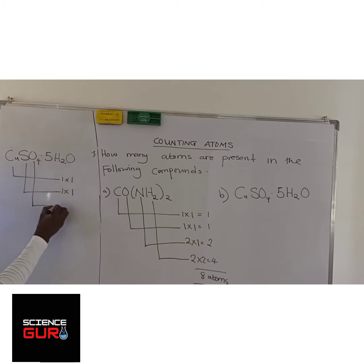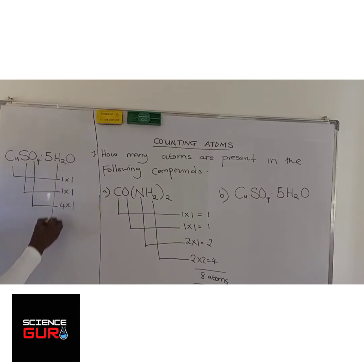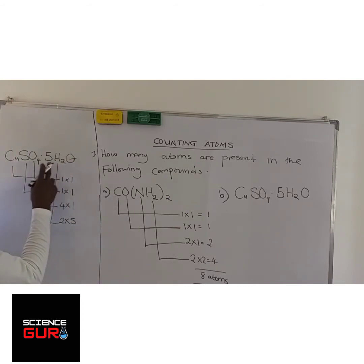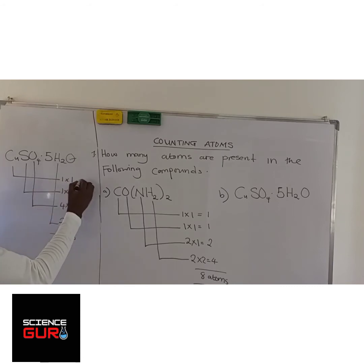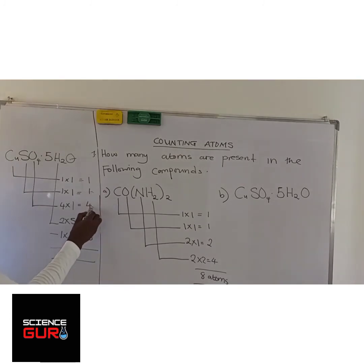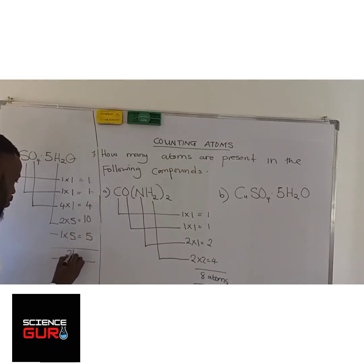How many oxygens in SO₄ are present? Four times one. How many hydrogens are present? Two times five. Then we come to this oxygen — one times five. So: one times one is one, four times one is four, two times five is ten, one times five is five. Count them up: one plus four plus ten plus five gives you twenty, plus the one copper gives you twenty-one atoms total.